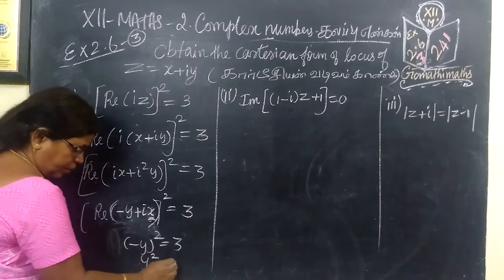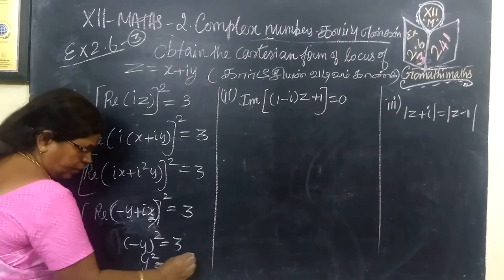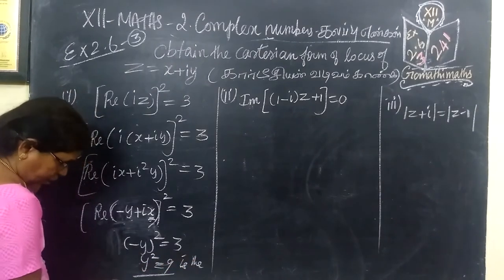Y² equal to 9 is the Cartesian equation.